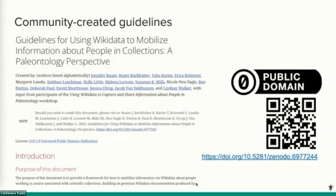A major result of the first workshop was the co-creation of a document: 'Guidelines for Using Wikidata to Mobilize Information about People in Collections: A Paleontology Perspective.' These guidelines lay out conventions for creating and editing Wikidata items about people connected to biodiversity collections, and serve as a step-by-step learning resource. While examples relate to paleontology, the document was written to be general enough for the broader community and published in the public domain to encourage maximum uptake.